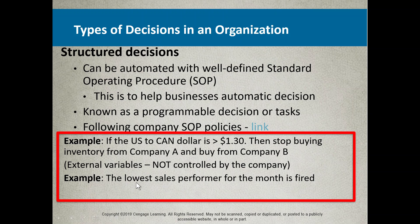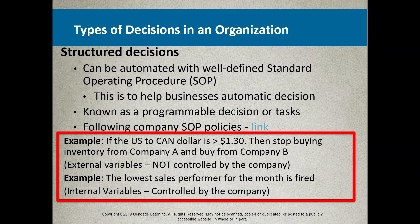Here's another example — a famous one from British Columbia entrepreneur Jimmy Pattison. He implemented a structured decision within his organizations when it came to salespeople: the lowest sales performer for the month is fired. What that created was every salesperson competing to make more sales than the others, because the one at the bottom was fired. That's an internal variable controlled by the company. As a result of this structured decision — brutal as it sounds — Jimmy Pattison made a lot of money and is one of the richest businessmen in Canadian history.